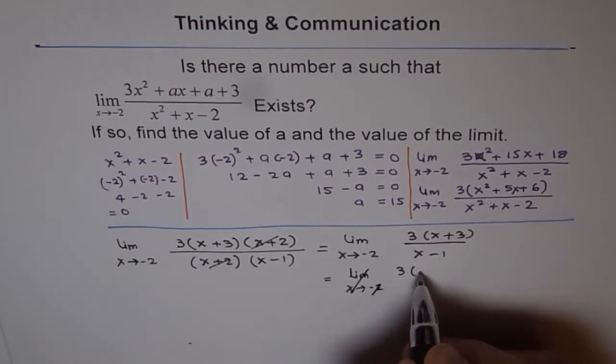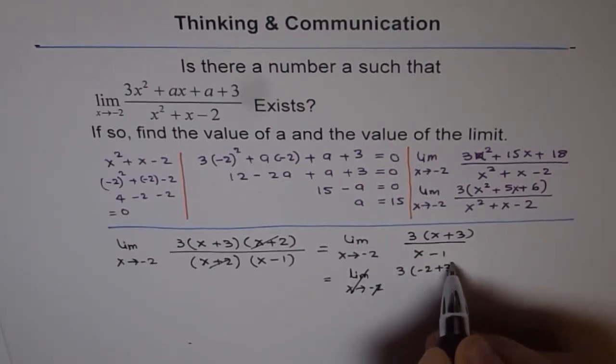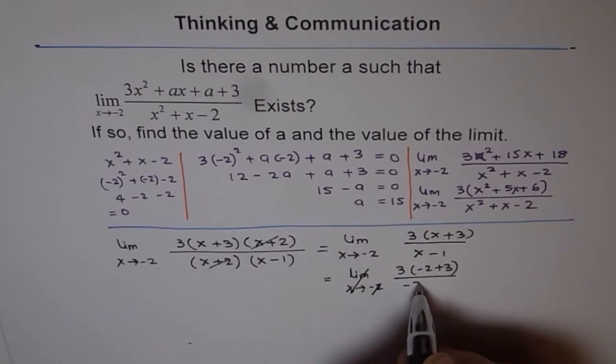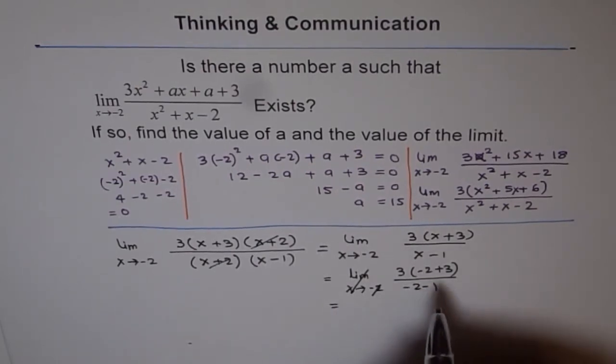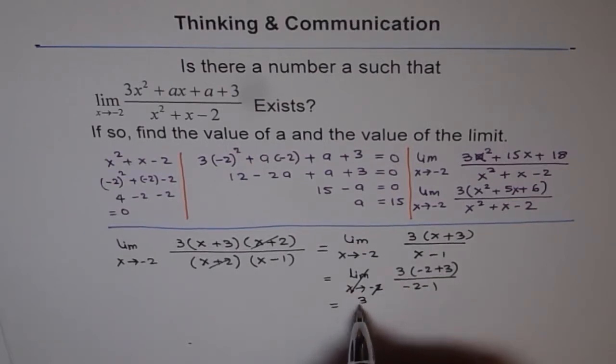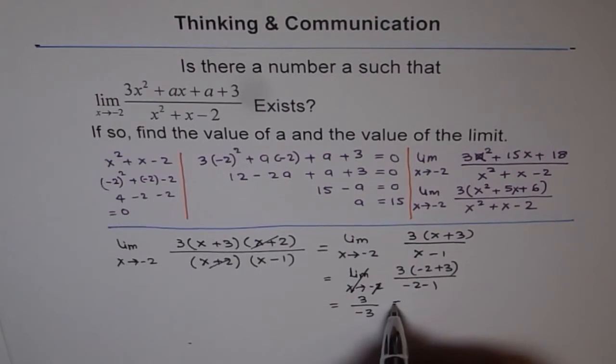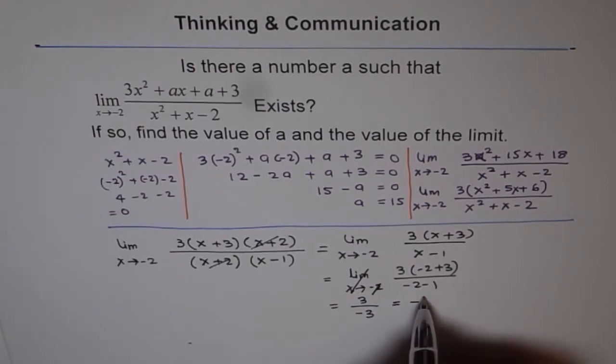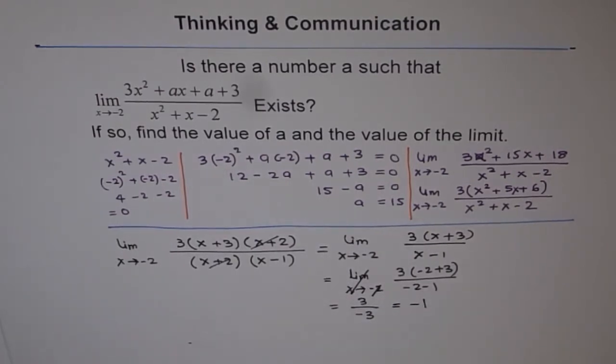So, that is 3 times minus 2 plus 3 over minus 2 minus 1. And that gives us minus 2 plus 3 is 1, 1 times 3 is 3, and minus 2 minus 1 is minus 3. And therefore, we get our answer as minus 1. So, limit of this exists only when a is 15 and the limit is minus 1. So, that is how we get our answer.